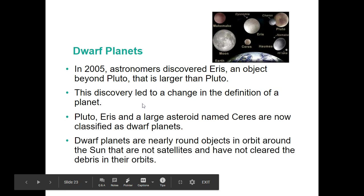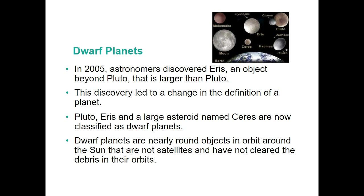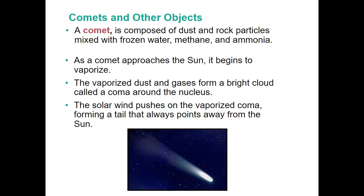Dwarf planets are smaller objects that orbit the sun but are not the sun's satellites. They are nearly round but have not cleared the debris in their orbits. For example, Neptune's gravity actually influences Pluto's orbit, pulling it off a defined path — that's one reason Pluto is classified as a dwarf planet rather than a full planet.